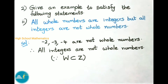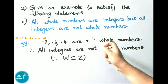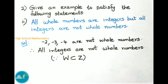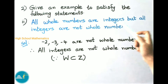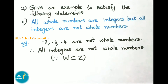Second: all whole numbers are integers, but all integers are not whole numbers. We know whole numbers start from 0, 1, 2, 3, and so on. All these whole numbers are integers, but all integers are not whole numbers, because integers consist of all whole numbers — all positive numbers — and also negative numbers, which are not present in whole numbers. For example, -2, -3, -4, and so on are not whole numbers but they are integers. Therefore all whole numbers are integers but all integers are not whole numbers, since whole numbers are a subset of integers.